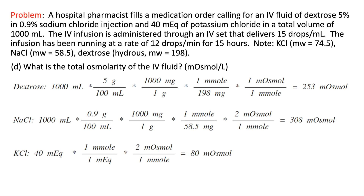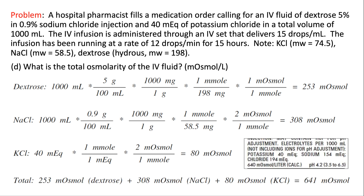Adding all components: 253 from dextrose + 308 from sodium chloride + 80 from potassium chloride = 641 milliosmoles per liter. The commercial product label for this solution shows 640 milliosmoles per liter — our calculated result essentially matches the labeled value.